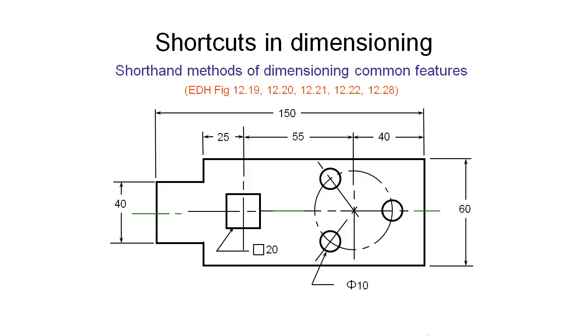Our other shorthand is for indicating the diameter of the holes or the circles that we have in our drawing. And this symbol, as we've explained before, is used to indicate a diameter, in this case 10 millimeters.